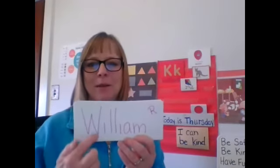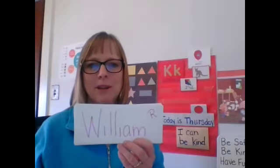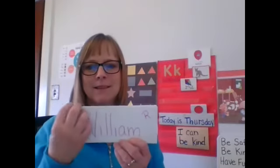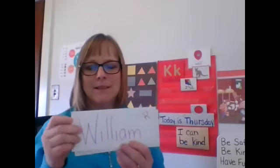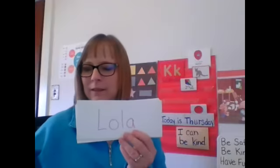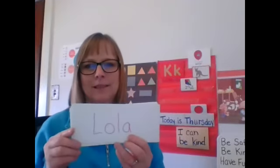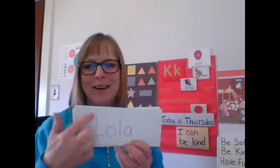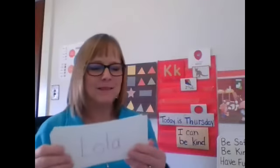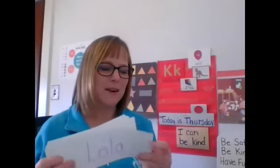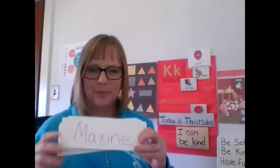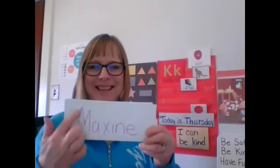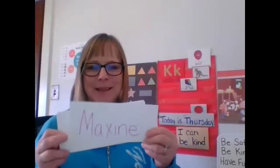William. William starts with the letter W. This is William Ryan. Lola — Lola starts with the letter L. Lola starts with a letter L, no K in her name.